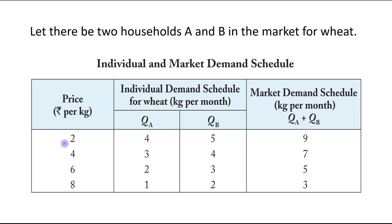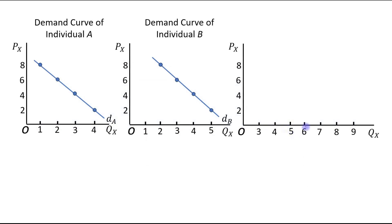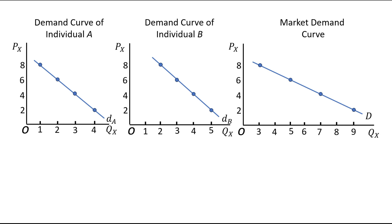In the same way, we will draw the market demand curve. At a price of rupees 2 it is 9 kg, at a price of rupees 4 it is 7 kg, at a price of rupees 6 it is 5 kg, and at a price of rupees 8 it is 3 kg. At a price of 6 it is 5 kg, and at a price of 8 it is 3 kg. We will join these combinations and we get the market demand curve. In this way you draw the individual demand curves and the market demand curve.